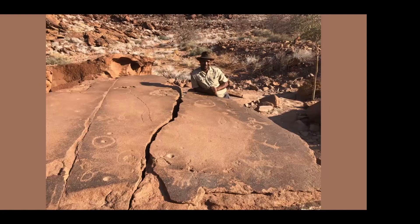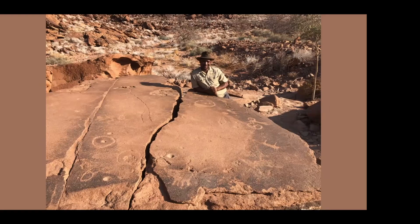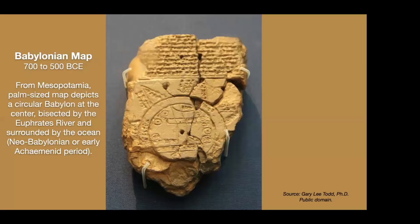Humans have been making maps for a very long time. This is a stone age map at Twifelfontaine in Namibia, thought to be about 6,000 years before present, from what is known as the Wilton Culture Group. Most of the markings are on a very large boulder. They think the circles correspond to known springs or water sources in a desert environment, with various animals around on the map. We've been trying to depict our environment in a more permanent way — on rock, on paper — for a very long time.